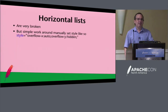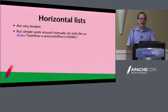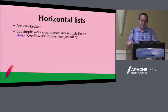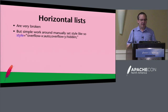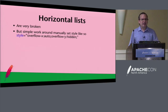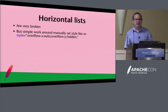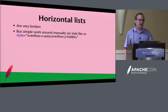Horizontal lists are very broken — so broken you wouldn't believe it. However, there is a very simple fix: set overflow-x to auto and overflow-y to hidden, and that tends to sort things out. We should come up with some way of setting overflow via beads — I don't think there's a bead for that yet.